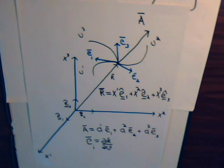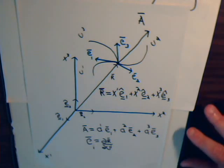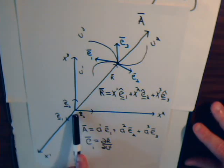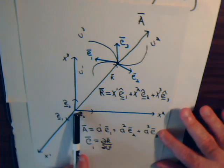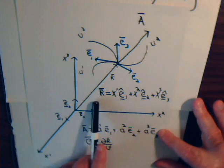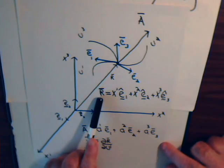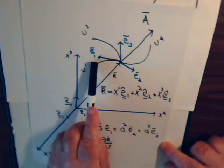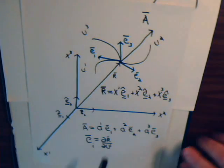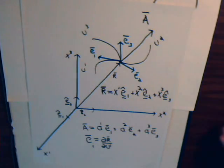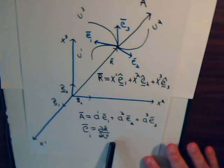The way we found these tangential vectors in the previous video was: here's a Cartesian coordinate system with its unit vectors, and here's the position vector expressed in terms of the Cartesian coordinates. If we take the partial of this with respect to u1, it gives us e1. If we take the partial with respect to u2, it gives us e2. The general expression for the tangential vector was worked out in the previous video.